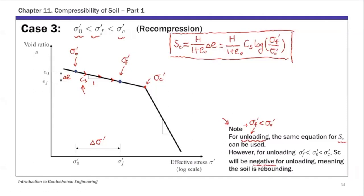These three cases allow you to handle most primary consolidation problems. The key is to figure out the void ratio change due to effective stress change, and once you know which case applies, you use the correct slope or equation to calculate that.